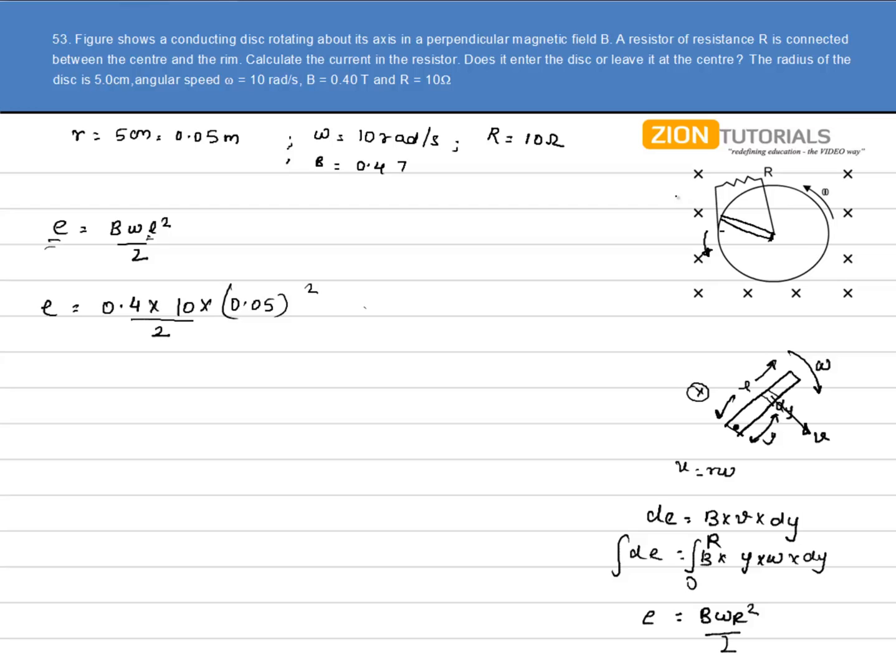To check the polarity of the battery, again the omega is in this direction, so velocity will be in this direction. Use the same concept: V cross B, that is the force acting on the charge present inside this rod. By V cross B, I get that positive charges are accumulated over here, negative charges are accumulated over here. So clearly this point is at higher potential, this is at lower potential.